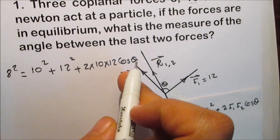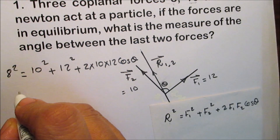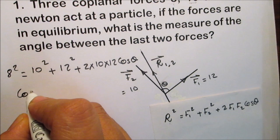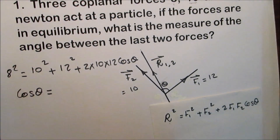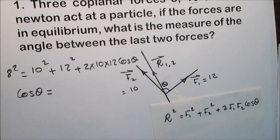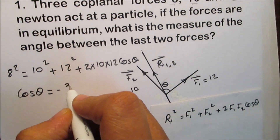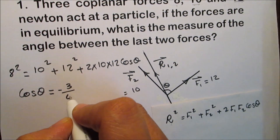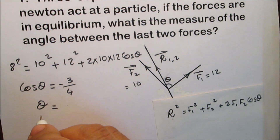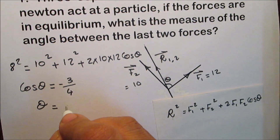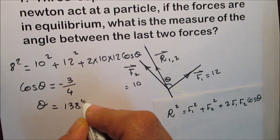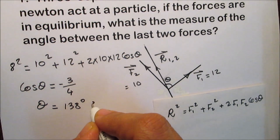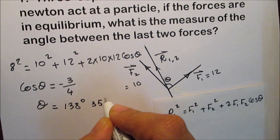Simplify and get cosine theta. So cosine theta equals negative 3 over 4. Then the angle theta between F1 and F2 is 138 degrees and 35 minutes.